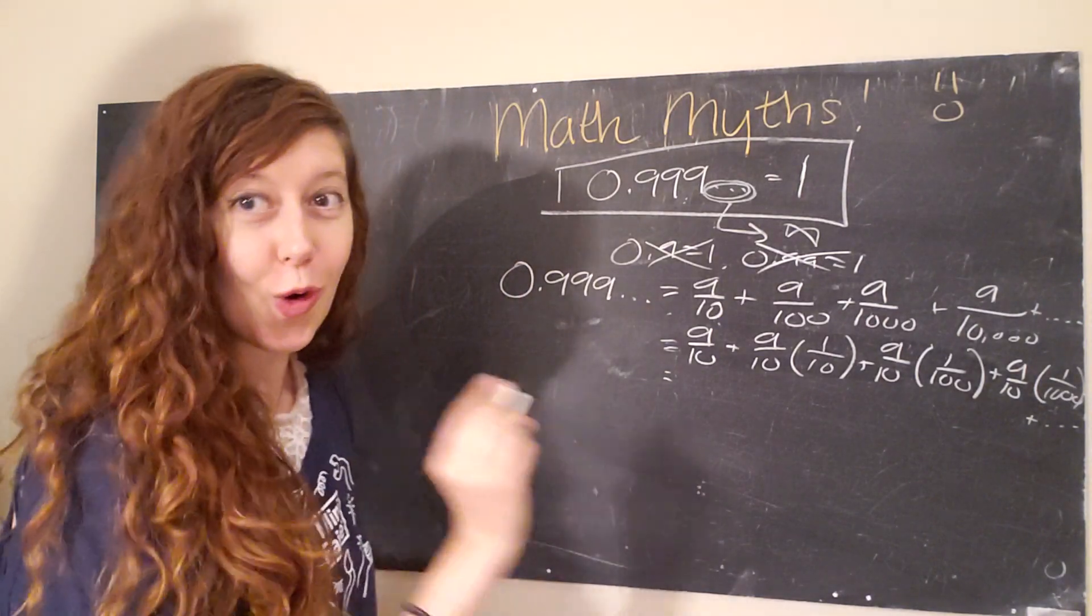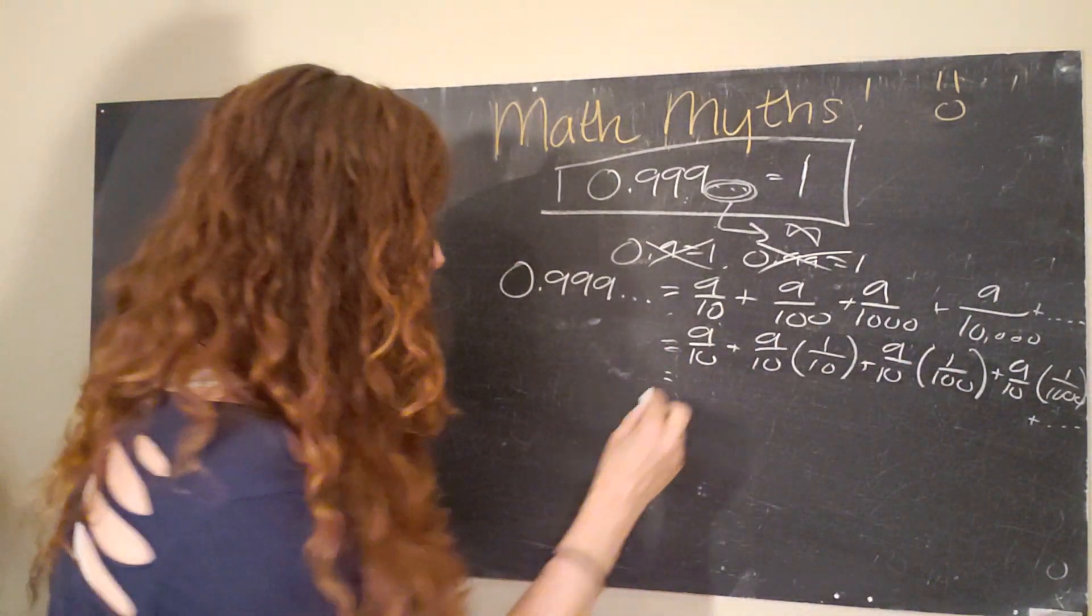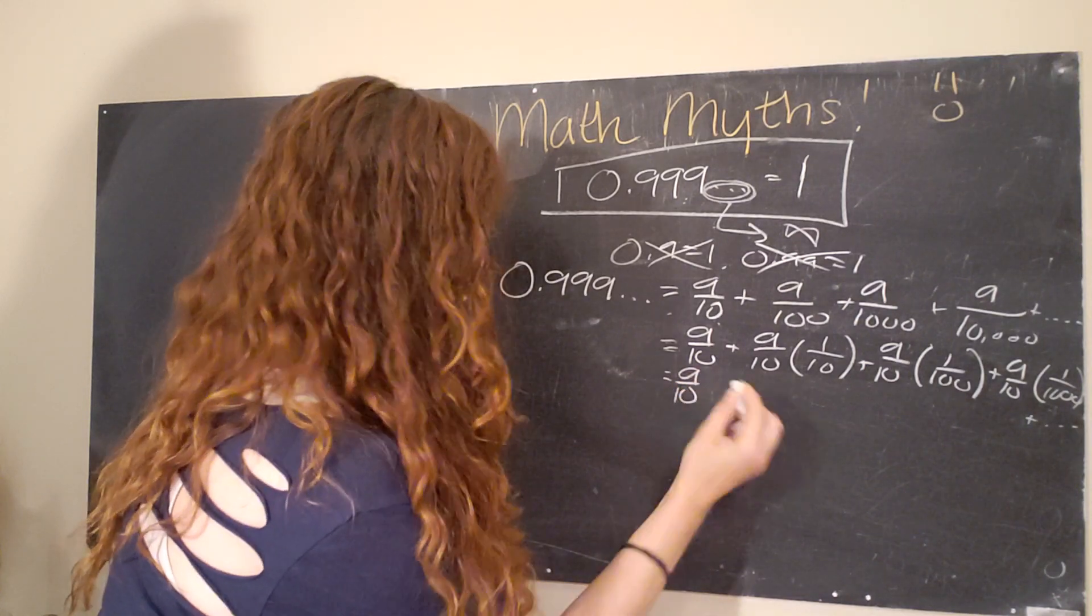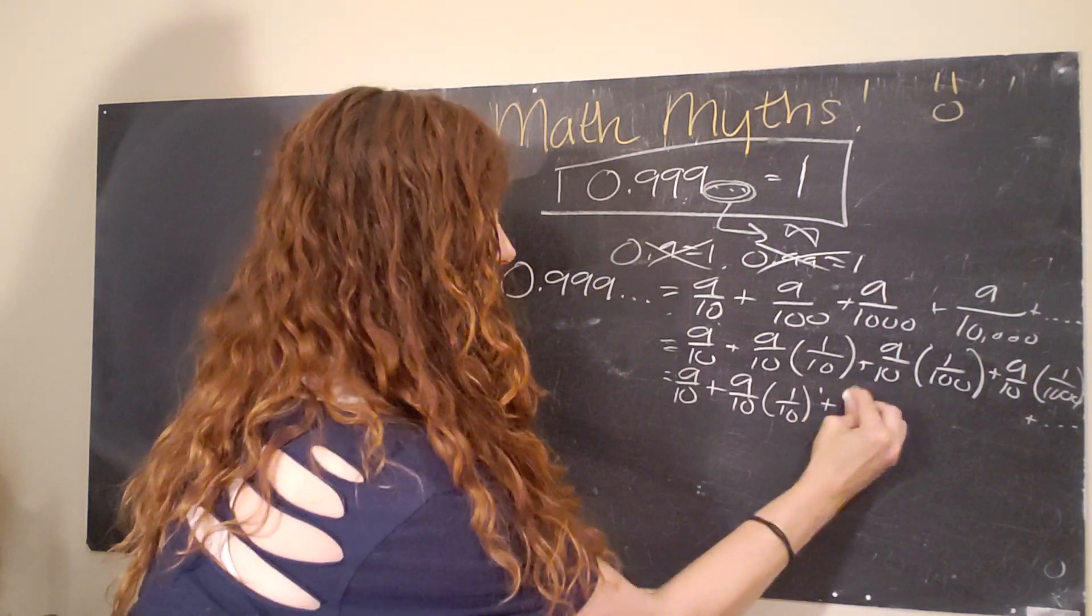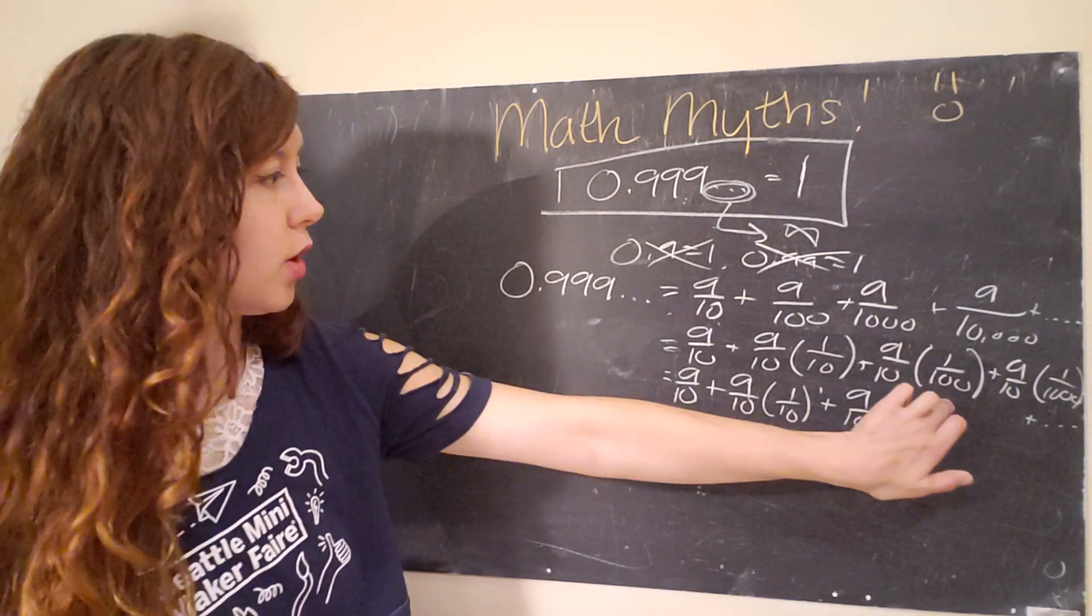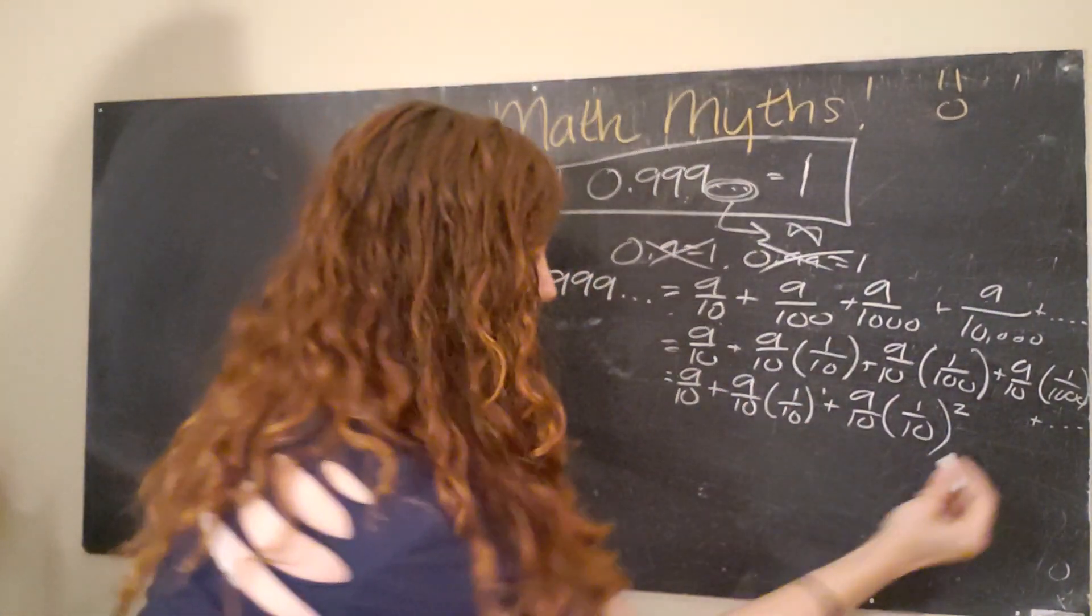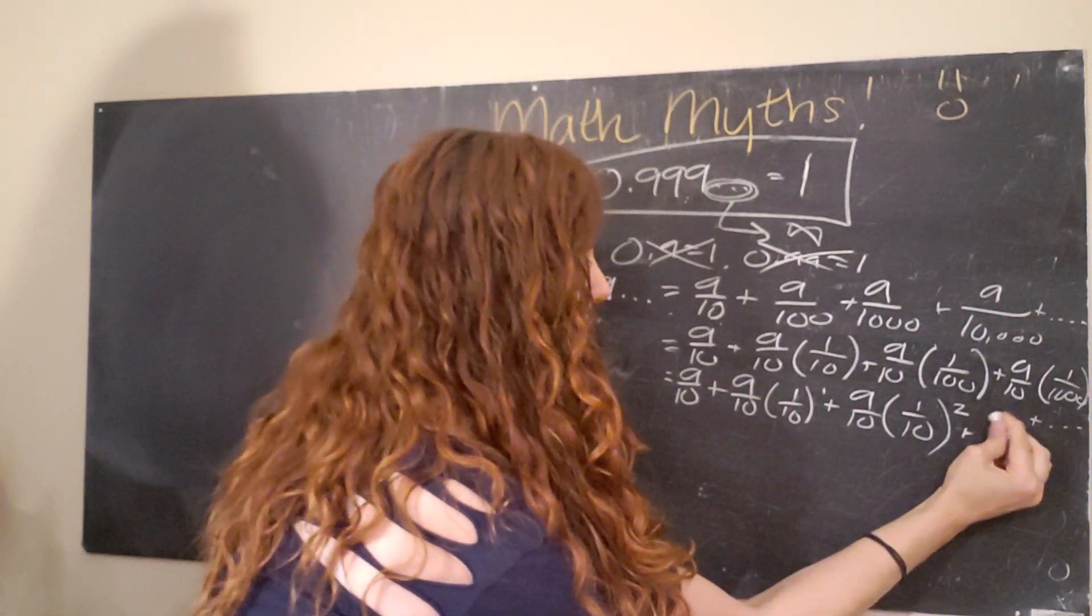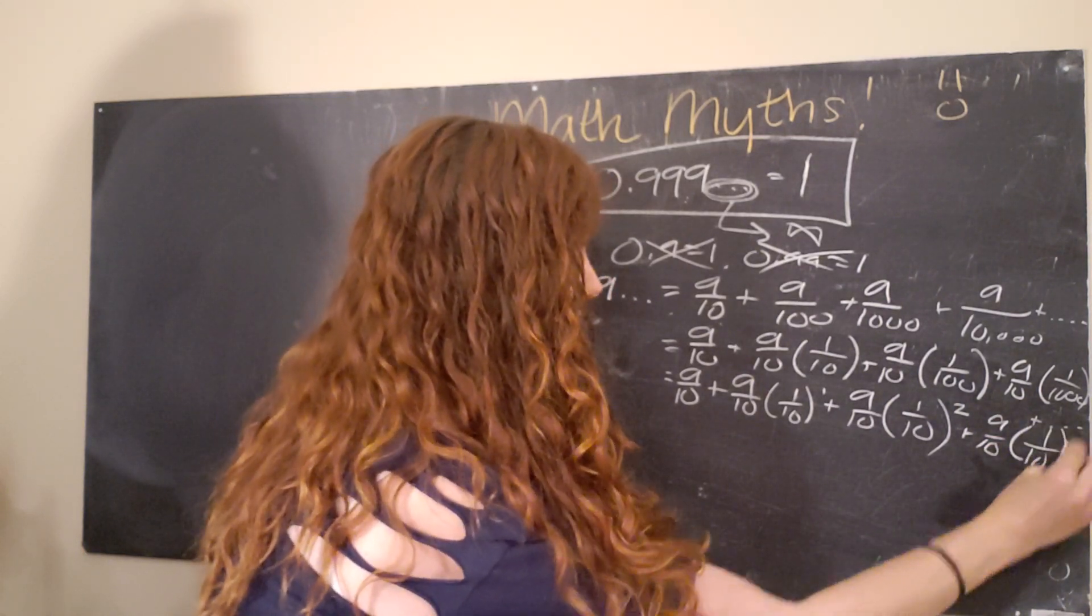Okay, so we are almost there to getting this to look like a form of a geometric series that we're used to. So 9 over 10 plus 9 over 10 times 1 over 10 to the 1st power plus 9 over 10 times 1 over 10. So you'll notice that 1 over 10, if you square it, it's 1 over 100. And similarly, when we keep going, we find that 1 over 1,000 is just 1 over 10 cubed.